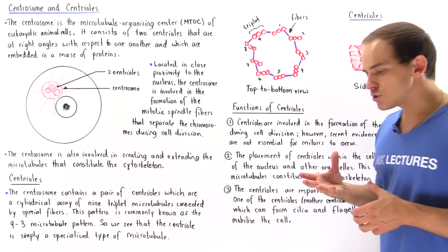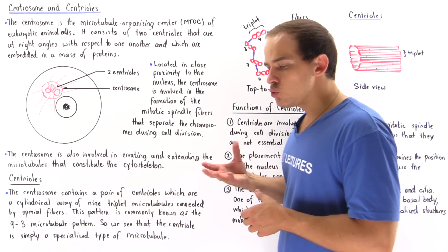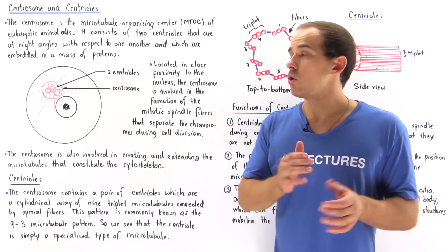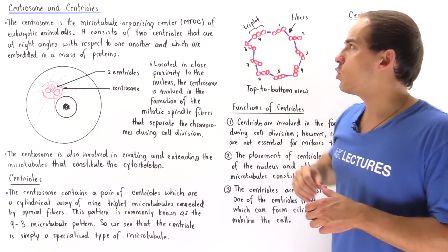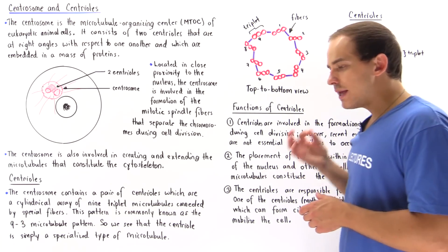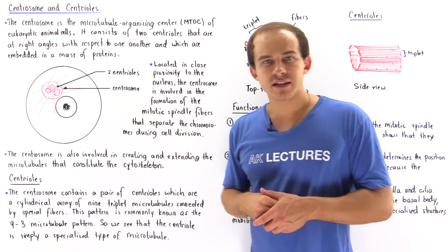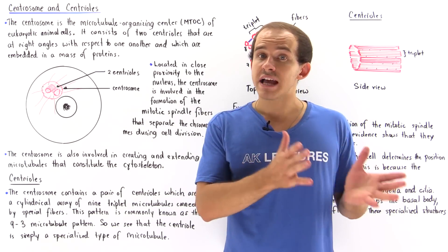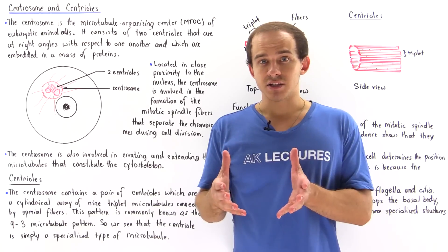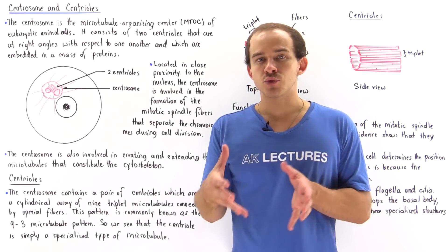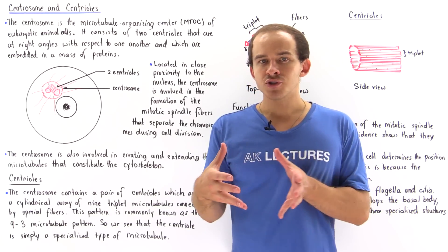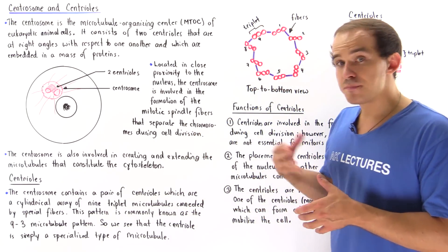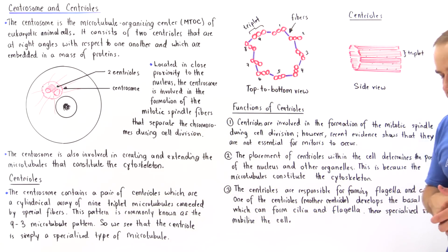The centrosome is our microtubule organizing center of eukaryotic cells, also known as MTOC. One centrosome is found per eukaryotic cell, and only animal eukaryotic cells have centrosomes. Plant cells and fungi do not have centrosomes. They have other structures that are responsible for building and organizing microtubules.